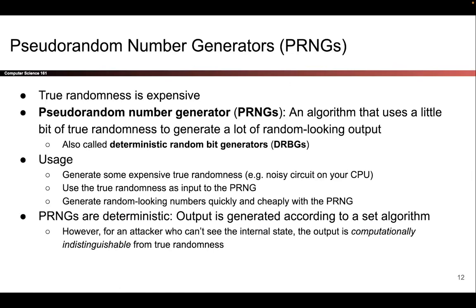Because true randomness is expensive, we instead turn to software. What we want is a pseudo-random number generator (PRNG). This is a piece of code that takes in a little bit of true randomness as input and is able to generate a lot of random-looking output very quickly and efficiently. You gather a little bit of true randomness, feed that into the PRNG, and the PRNG is able to efficiently and cheaply output a lot of random-looking numbers.